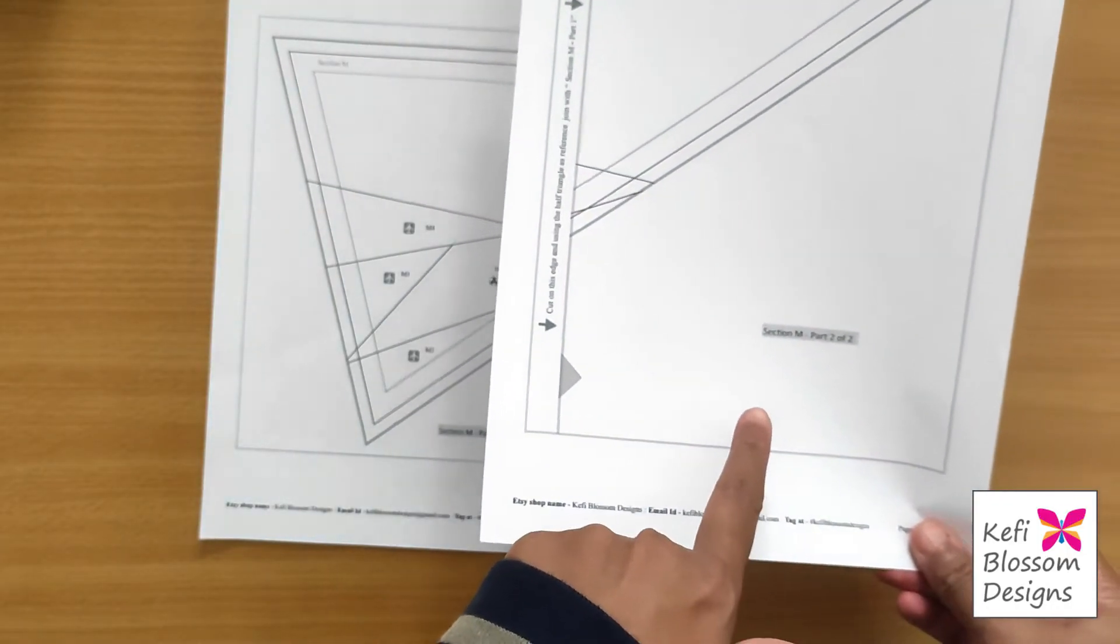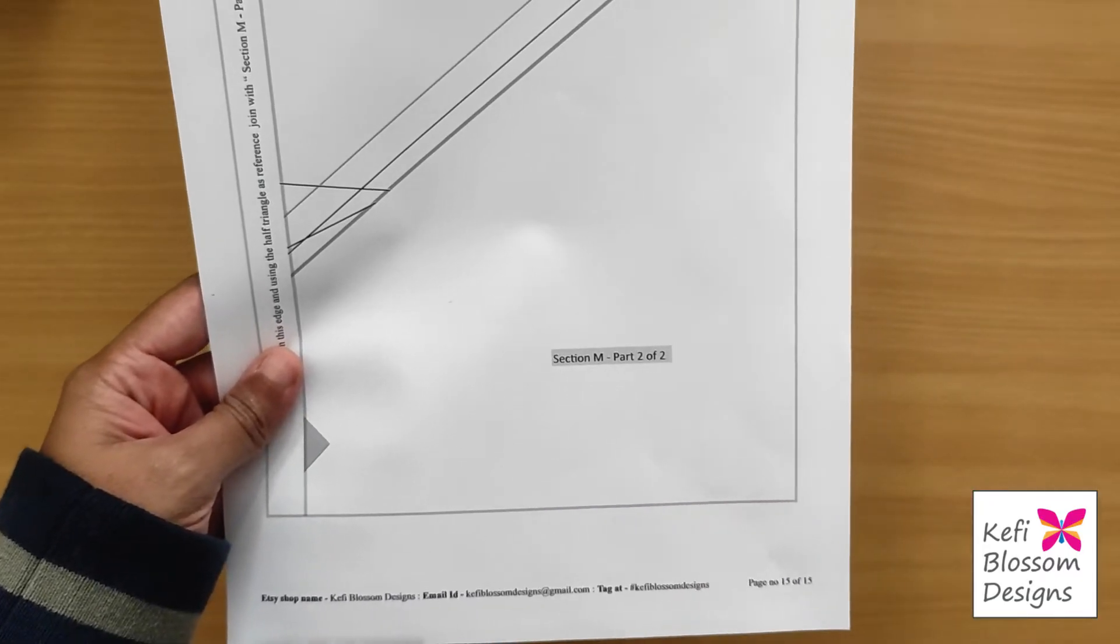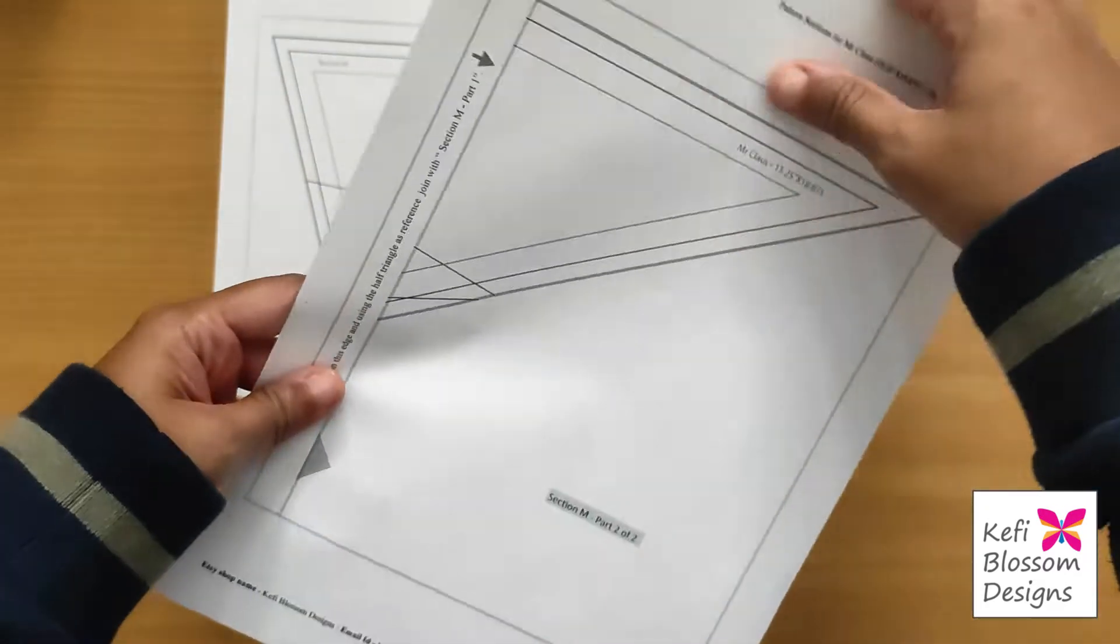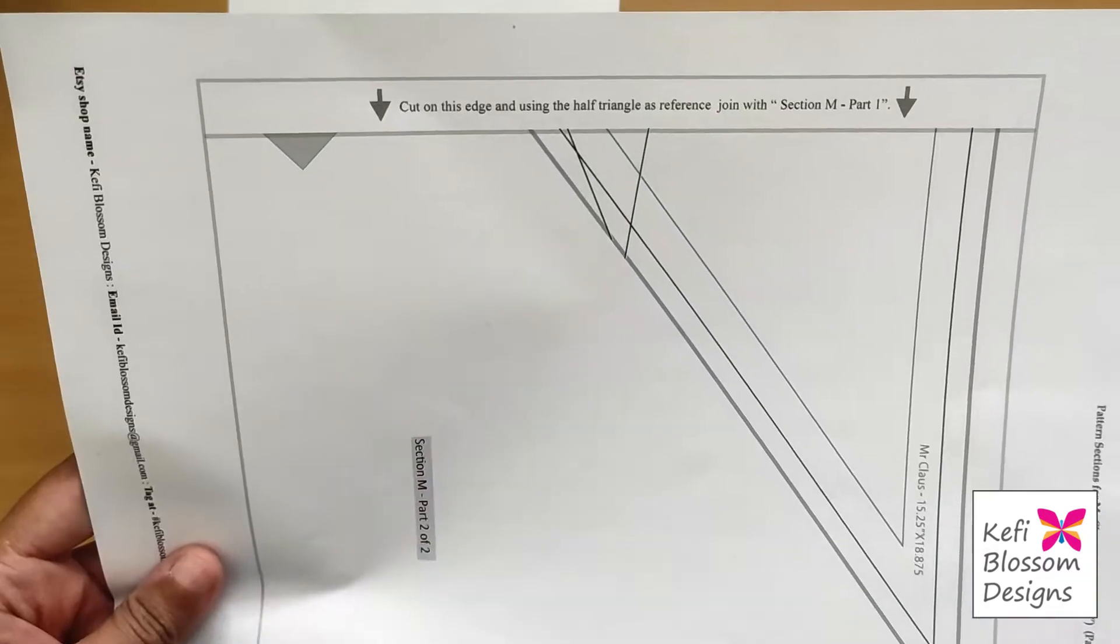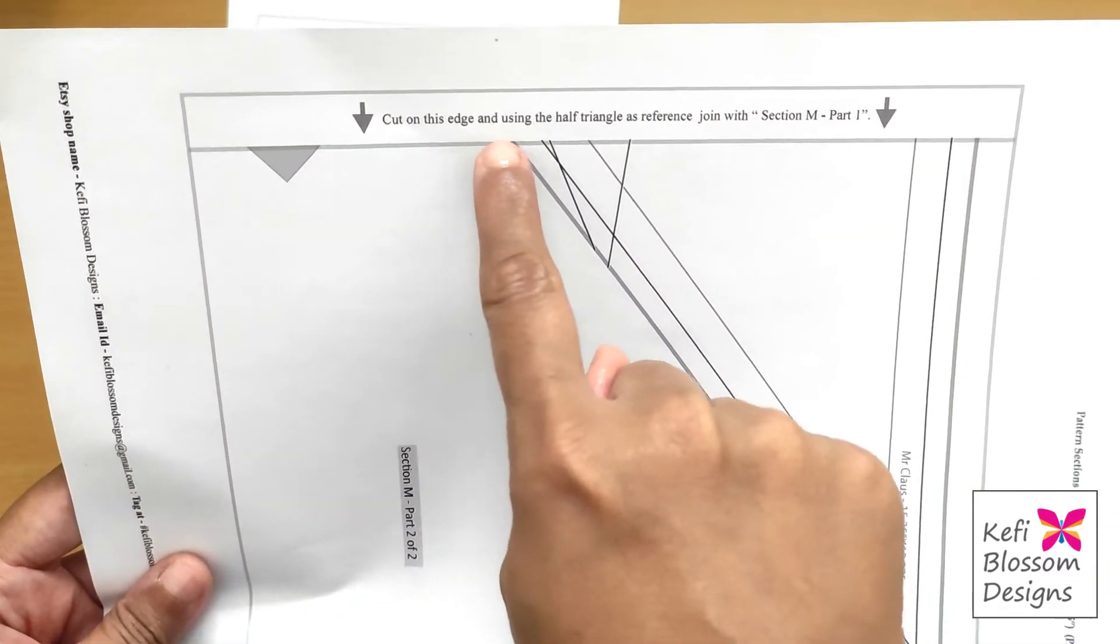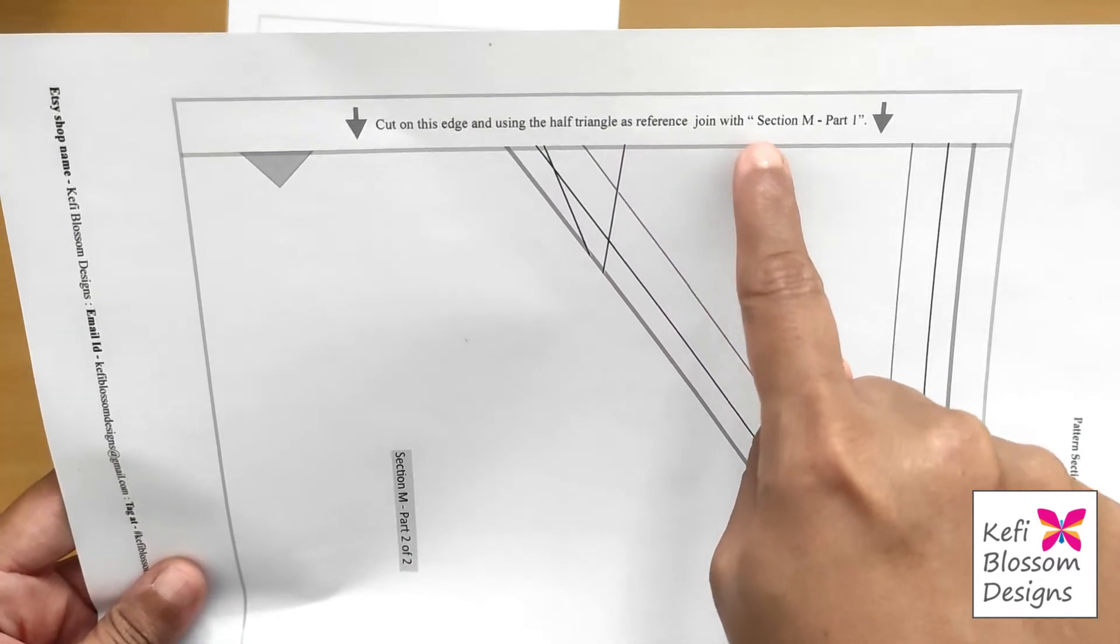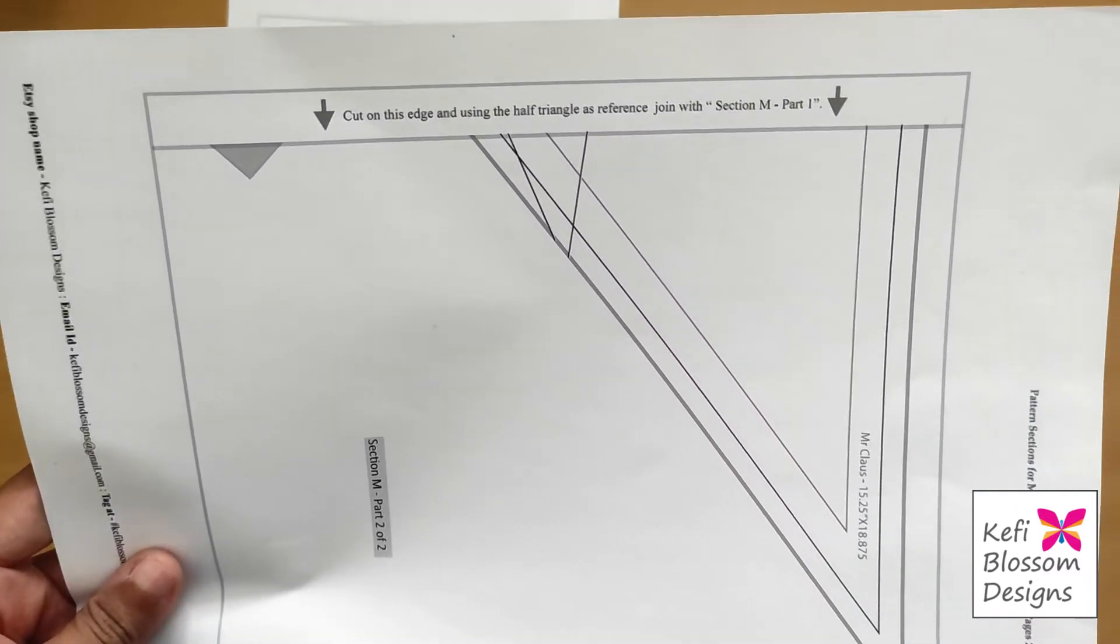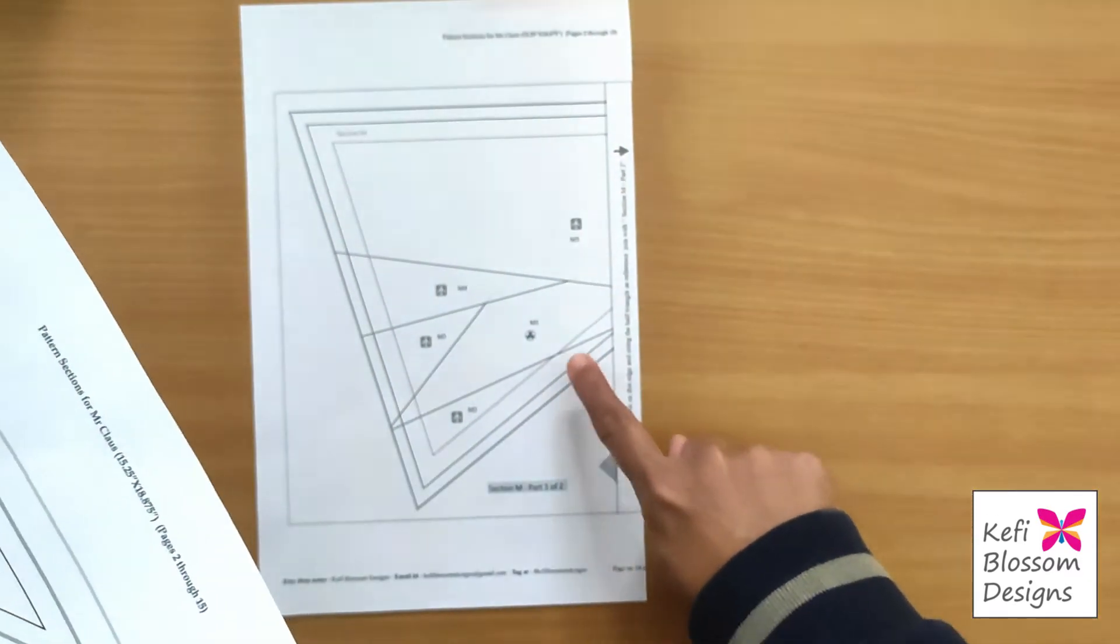Now we'll go to part 2. Again, first thing check the label and then read the instructions. In this case, it says cut on this edge and using the half triangle as reference, join it section M part 1. So this is part 1 that we cut earlier.